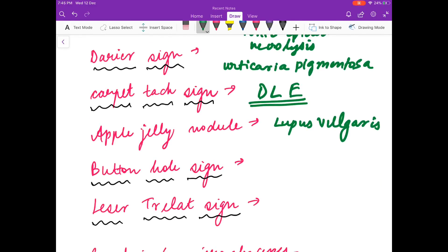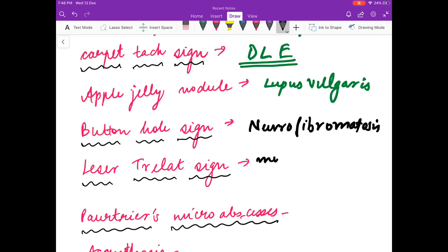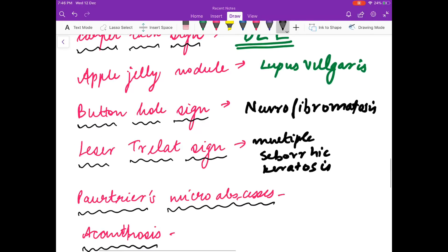Buttonhole sign is seen in neurofibromatosis. Leser-Trélat sign is seen in multiple seborrheic keratoses. These are seen in gastric adenocarcinoma. So Leser-Trélat sign is seen in gastric adenocarcinoma.